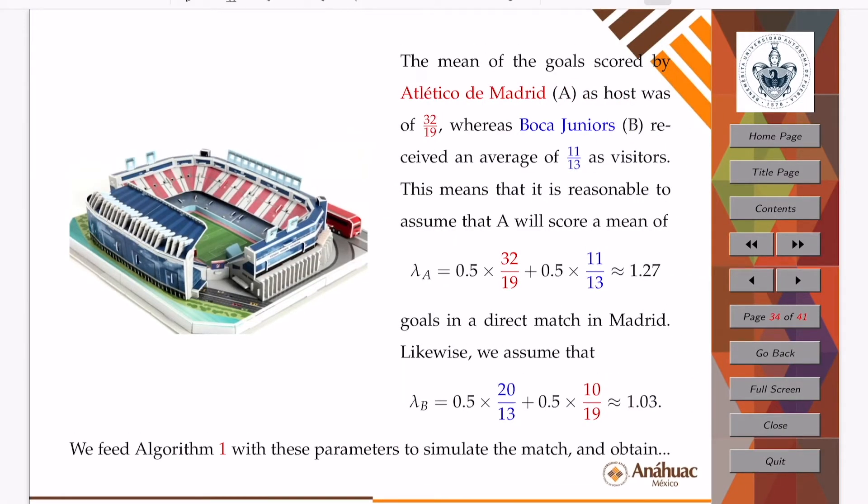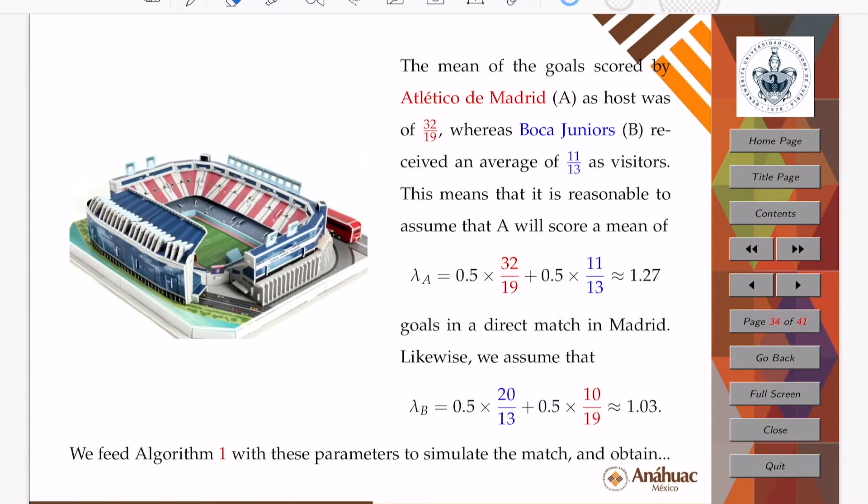With that information, we can see that the mean of the goals scored by Atleti as host was of 32 over 19, whereas the mean of the goals received by Boca was of 11 over 13, in such a way that the number of goals that we can assume that Atleti will score when they play against Boca will be an average: 0.5 times 32/19 plus 0.5 times 11/13 equals 1.27 goals in a direct match in Madrid.